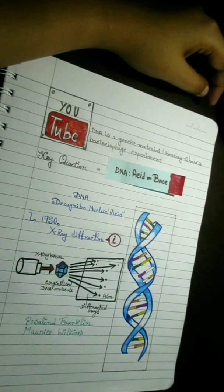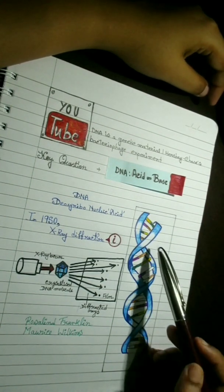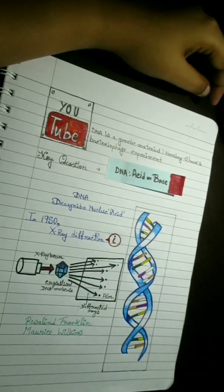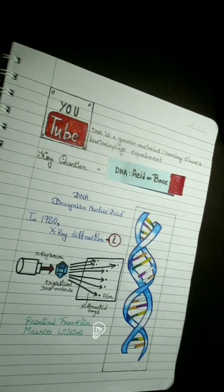Later, James D. Watson and Francis H. Crick used these data to help generate their model, the Watson-Crick DNA double helix model. Now, we are going to learn molecular structure of DNA.